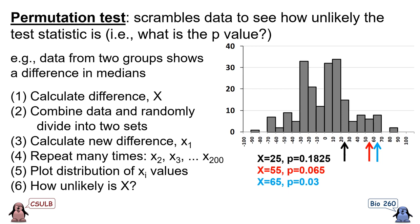First, we calculate the initial difference in medians and call that x. Second, we combine all the data from the two datasets together and then randomly divide it into two new datasets — we have permuted the data. Third, we calculate a new difference between the medians of our two new permuted datasets. Fourth, we do steps two and three many times and record each value.